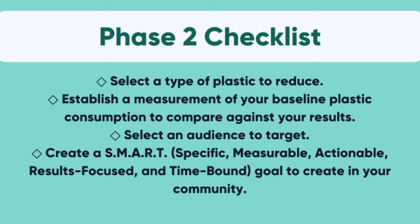During this phase your team is going to complete four tasks. The first is you're going to select a type of plastic to reduce. The second is you're going to establish a measurement of your baseline — that's the starting point for the plastics you want to reduce. The third is you're going to select an audience to involve in your campaign.